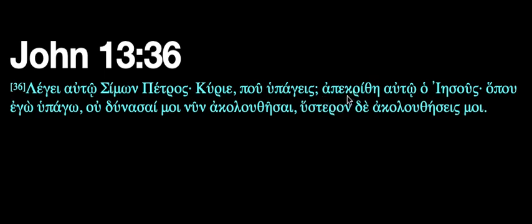So we've got 'apekrithe auto ho Iesous'. Notice the 'ho' — that's the subject marker, it's a definite article — so literally 'the Jesus', but we're going to say Jesus. Now 'apekrithe' is an interesting word. It comes from 'apokrinomai'. Now that's actually an aorist passive form. There's no active form in this period of Greek — there's an active form probably in Homer, maybe the Iliad or the Odyssey, but none which exists from a later time. So we've got 'Jesus answered'.